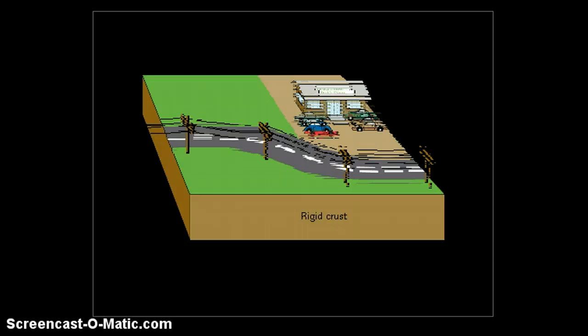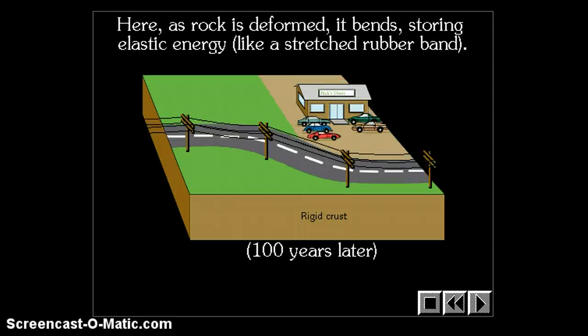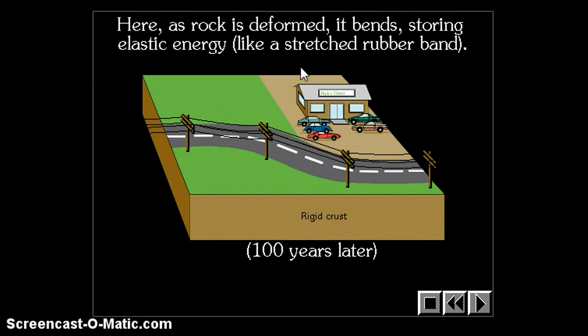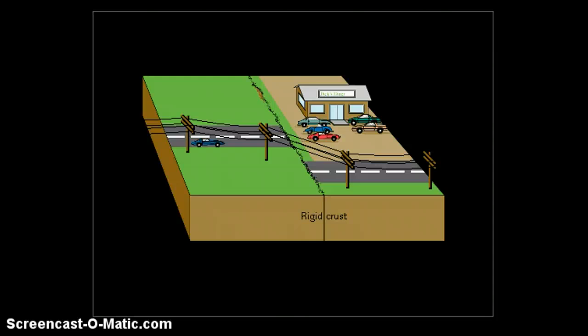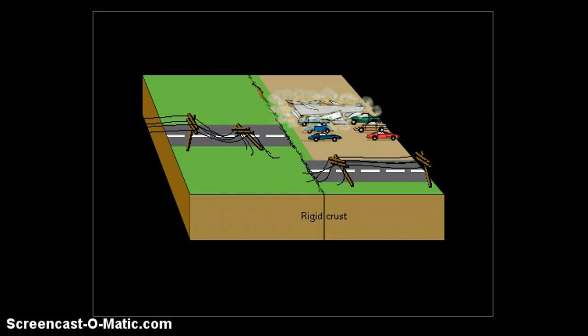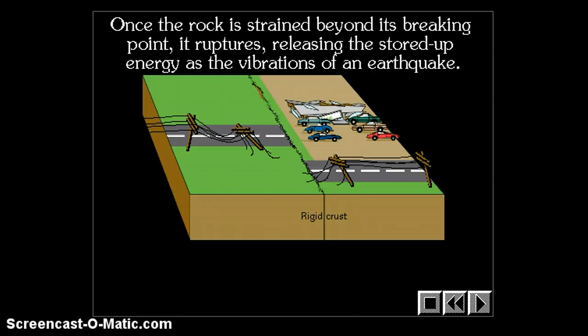Over time, stress builds and builds. This is a place showing a transform boundary where this chunk is moving in that direction and the chunk with the building on it is moving in this direction. Stress is building up and it's storing elastic energy like a stressed rubber band. But what happens when you continue to pull a rubber band? Eventually it breaks. When it breaks, that snapping back releases a lot of energy in the form of seismic waves, which can make buildings and bridges topple, as well as trigger landslides.